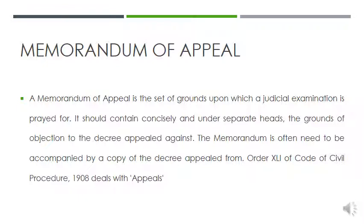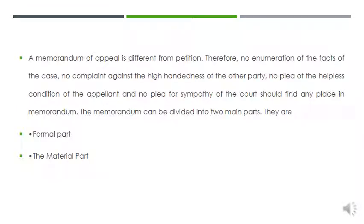The respondent must have fair notice of the grounds of objection which he has to meet at the hearing of the appeal. However, the appellate court is not precluded from deciding the appeal on other grounds. A memorandum of appeal sets forth the grounds upon which judicial examination is prayed for. It should contain concisely and under separate heads the grounds of objection. The memorandum is different from a petition — there should be no enumeration of facts, no complaint against the other party, no plea about the helpless condition of the appellant, and no plea for sympathy of the court.